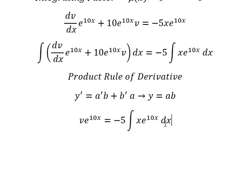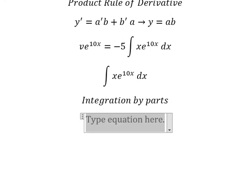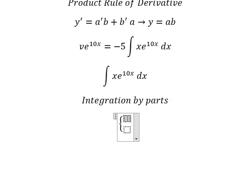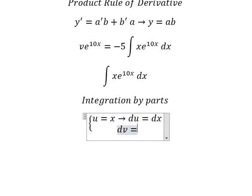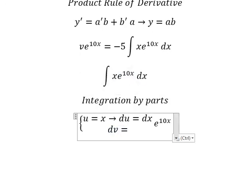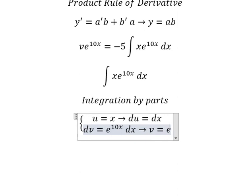Now we need to consider this integral. We need to use integration by parts. I will put u equals to x. Then we differentiate both sides, so du equals dx. For dv we take the exponential term, and integrating gives v equals e to the power of 10x over 10.